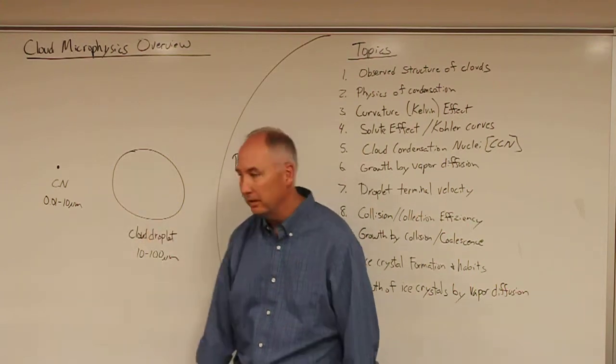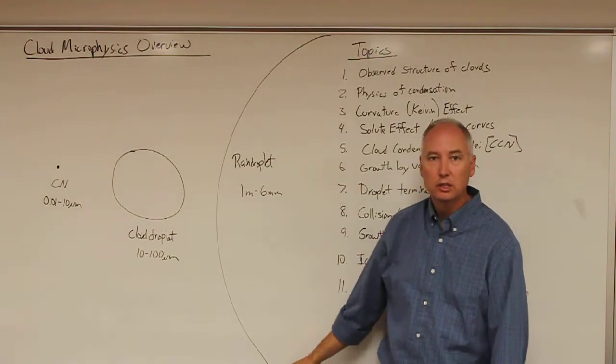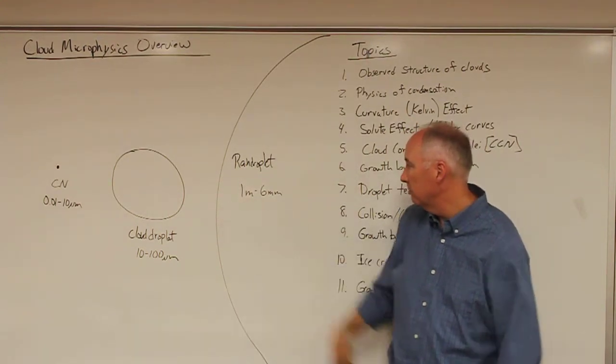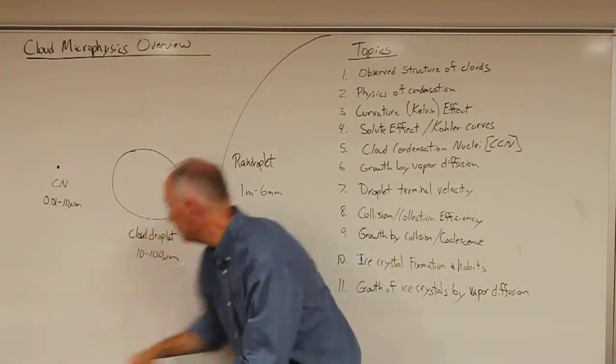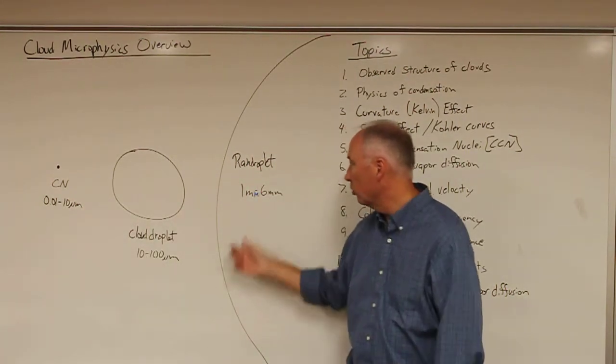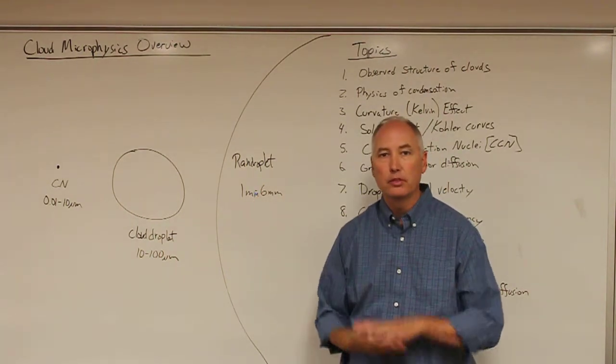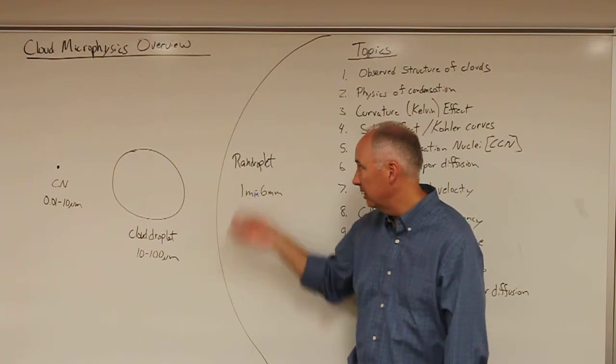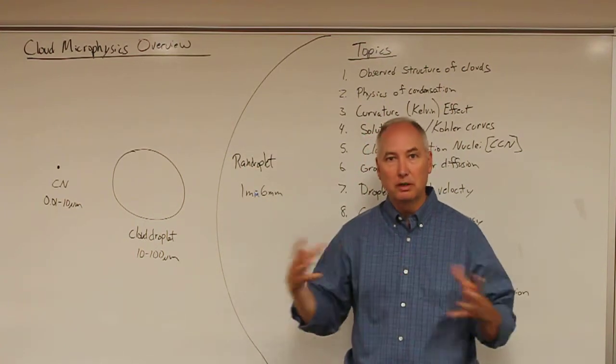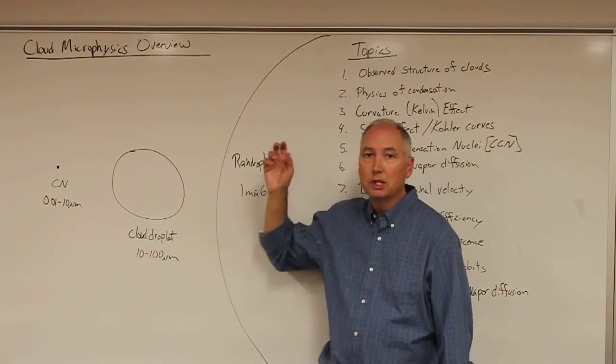Then you can contrast that with the size of a rain droplet, which is huge—anywhere from one millimeter all the way up to six millimeters. There's a physical reason why droplets don't get much larger than six millimeters: at that point, the drag forces are so large on the rain droplet that they actually start to split apart and break apart in flight.